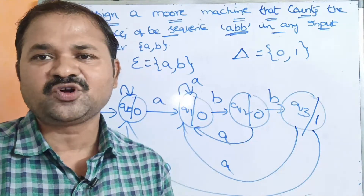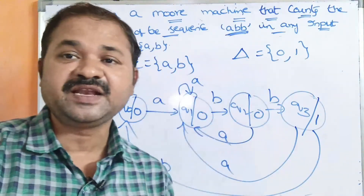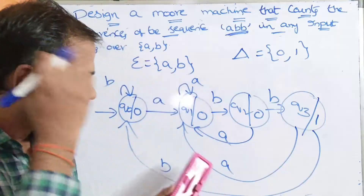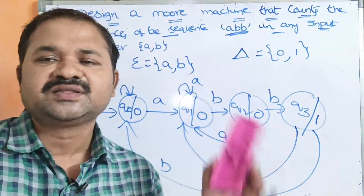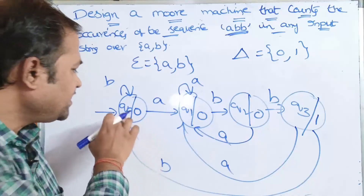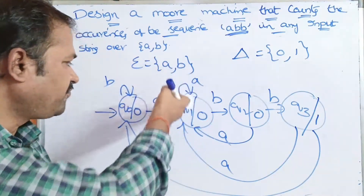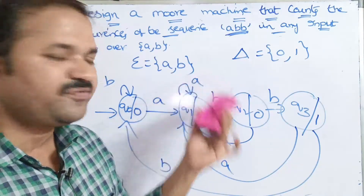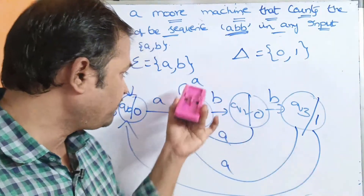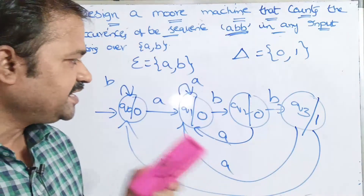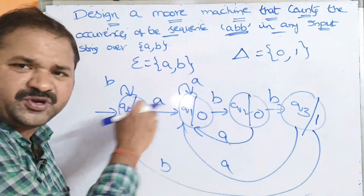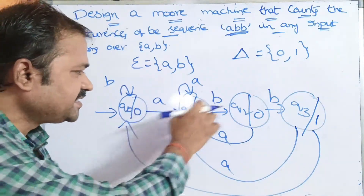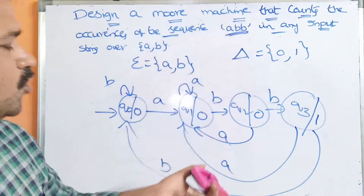What is the difference with a Moore machine? In a Moore machine, each state has an output irrespective of the input — that output is the same regardless. So the output of Q0 is 0, the output of Q1 is 0, and likewise for other states. A DFA doesn't produce any output, whereas a Moore machine or Mealy machine produces some output. This is the Moore machine.